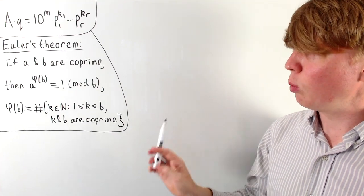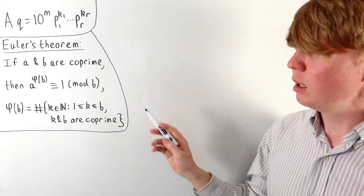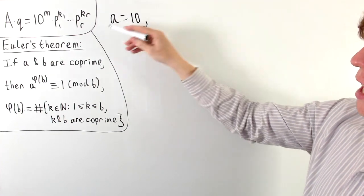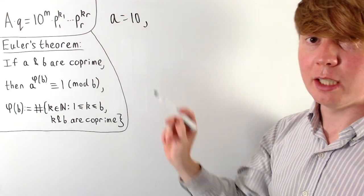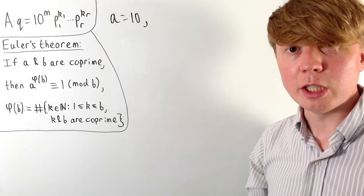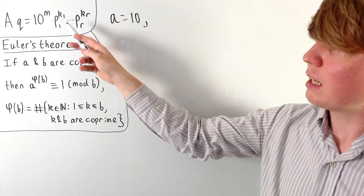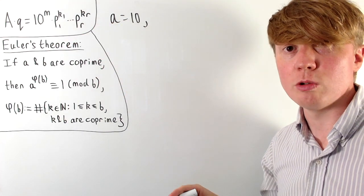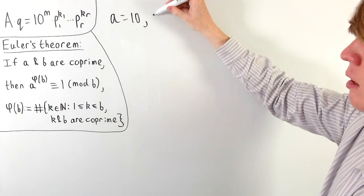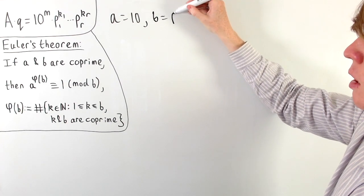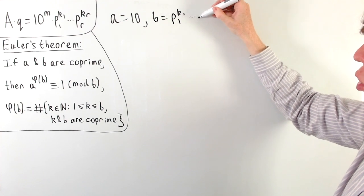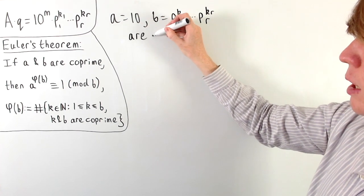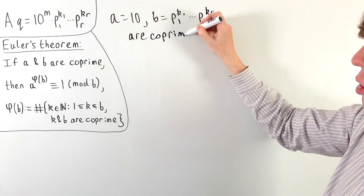Here we're going to take A equal to 10. By design, all of these remaining prime factors are going to be co-prime with 10, because we've taken out all of the 2s and 5s. So these are all prime factors which don't have 2s and 5s in them. We say B is p1 to the k1, all of these prime factors. These are co-prime, which means we can apply Euler's theorem.